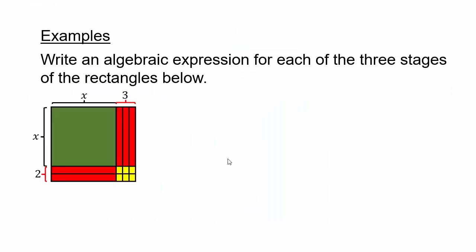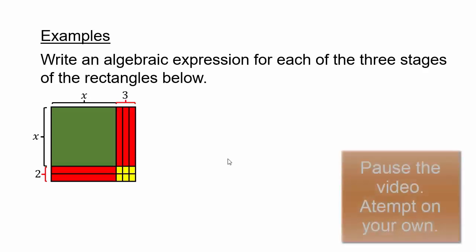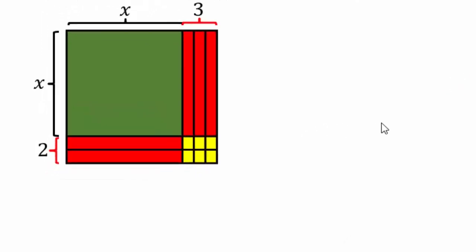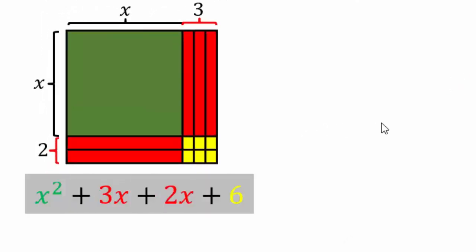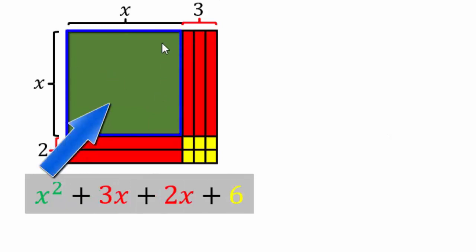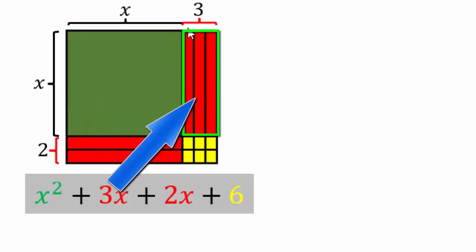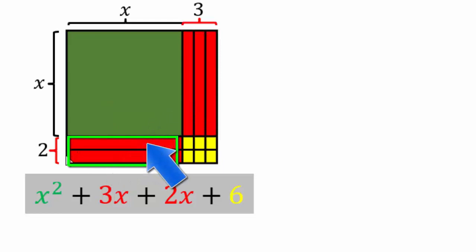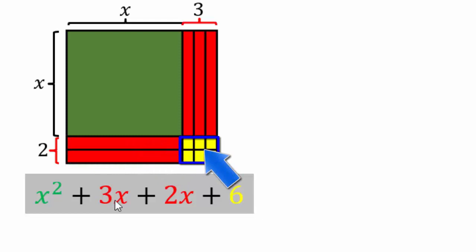Here is a rectangle — see if you can write an algebraic expression for its area. The green area is x times x or x squared. The red area vertically is 1, 2, 3 times x or 3x. Horizontally there are 2x's. And the 1 by 1 squares — there are 6 of them, so that's 6. So it would be x squared plus 3x plus 2x plus 6.